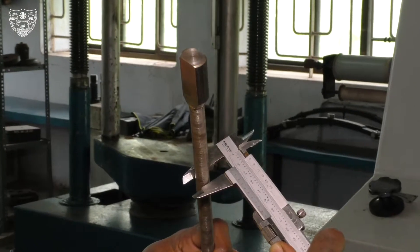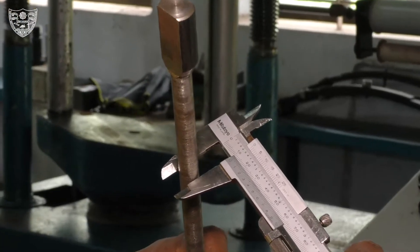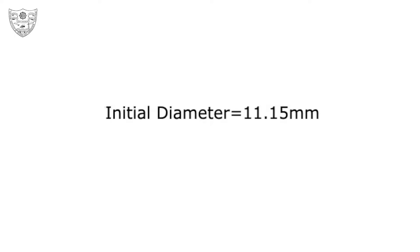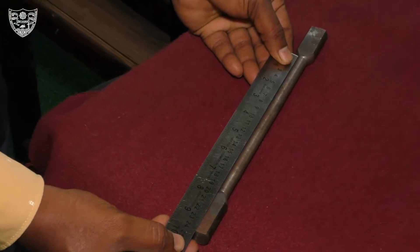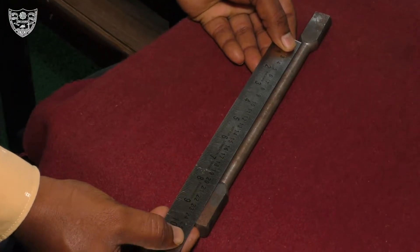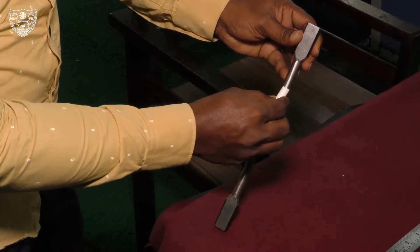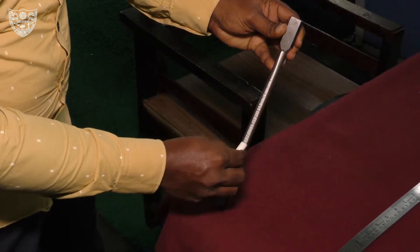Measure the diameter of the torsion test sample at two or three places and the average value is obtained. The gauge length of the specimen is also measured.